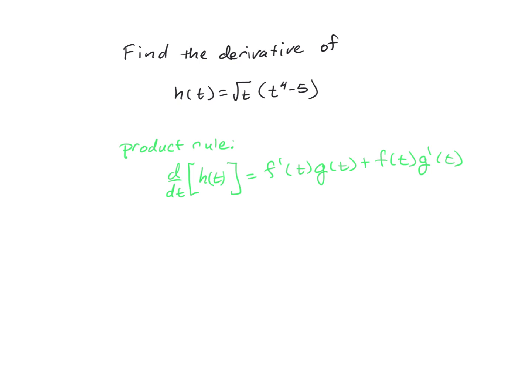For this video, we want to find the derivative of h(t) = √t times the quantity (t^4 - 5).